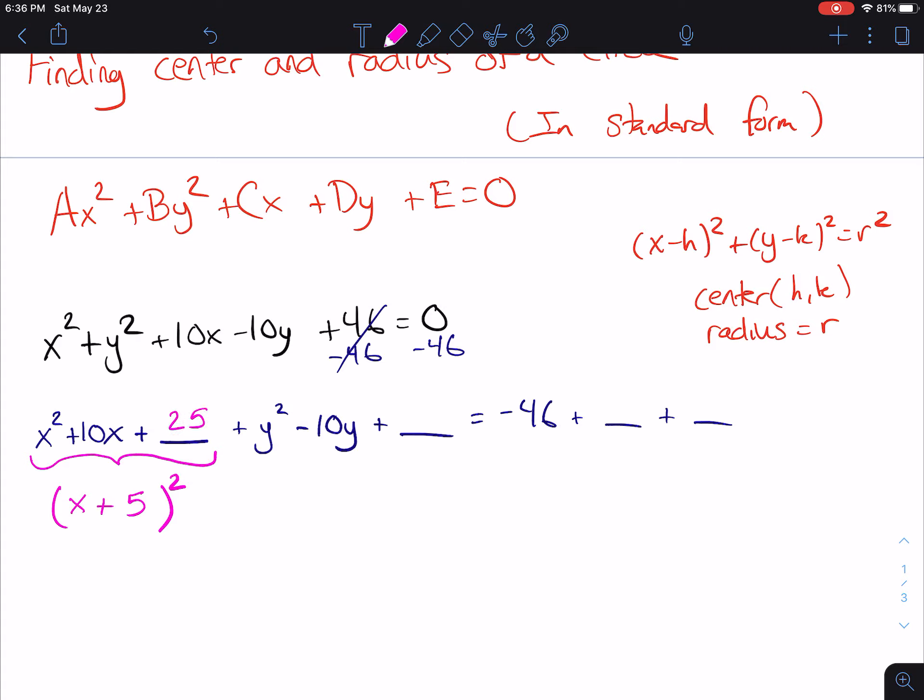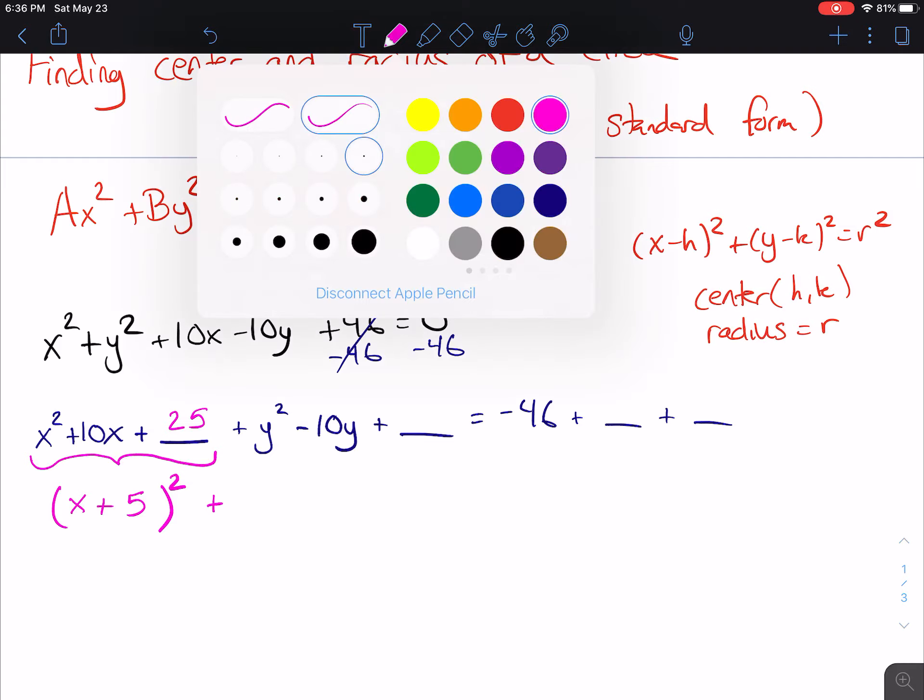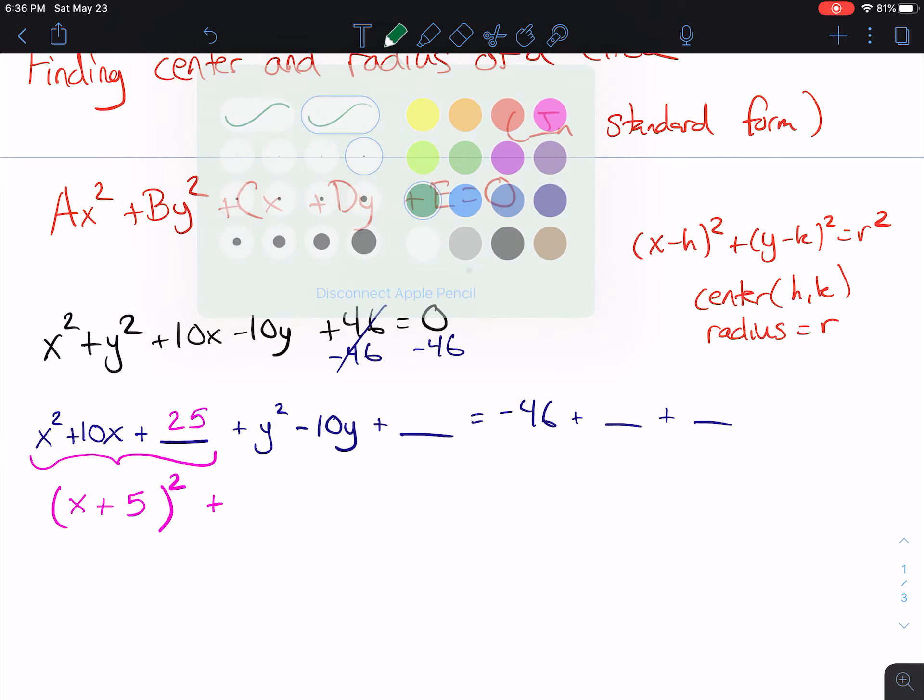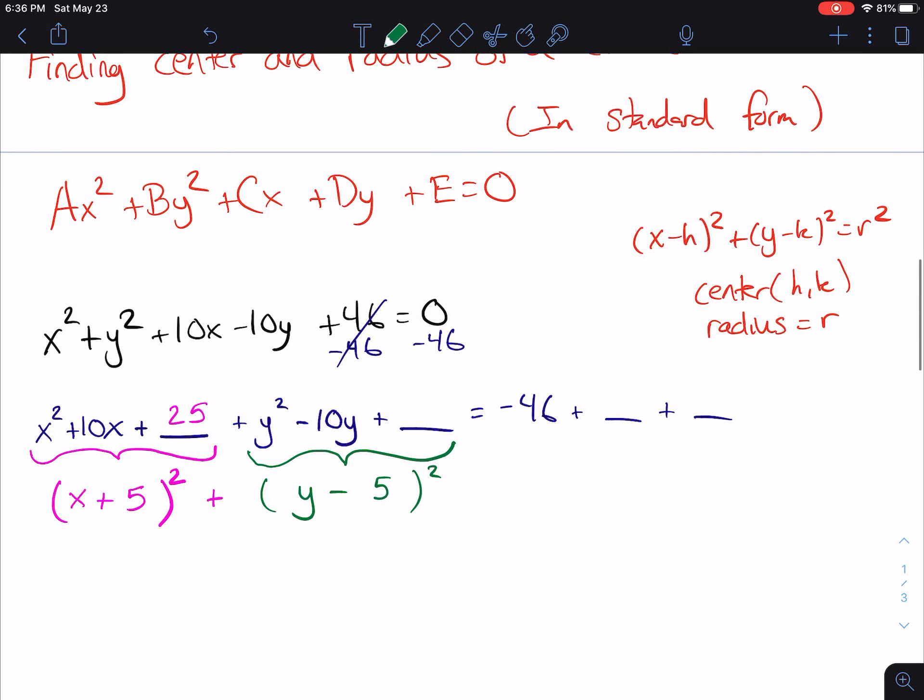So just to go through that one more time. We took the 10, we divided it by 2. That got us the 5. We then take that 5 and square it. That gets us the 25. So let's change colors just so that we can see the difference. And now we're going to do the exact same thing to the y squared minus 10y. But this time our variable is y. Our sign is minus. So now we're going to divide. 10 divided by 2 is 5. And 5 squared is 25.